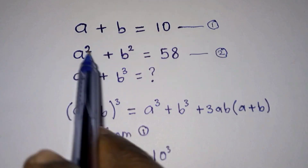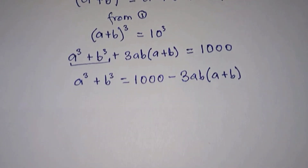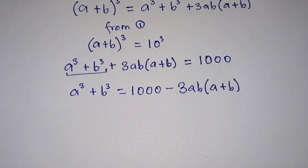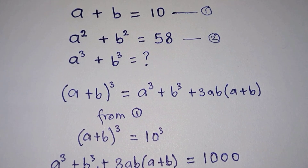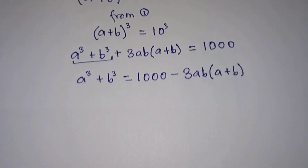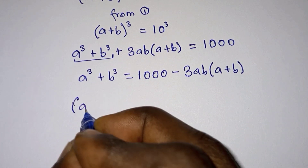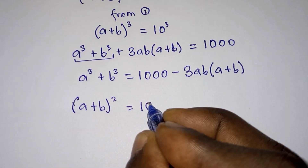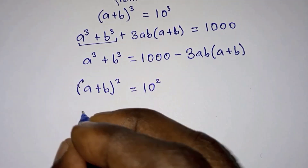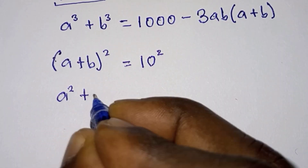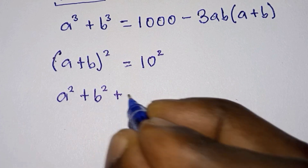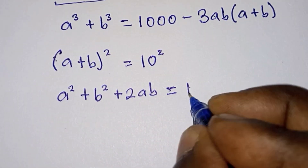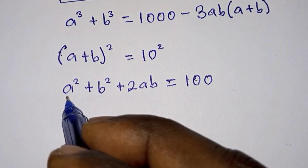For a plus b we know from equation one that it is 10. Now what is ab? If we find ab then the question is solved. To get ab, let's square equation one so that we get (a plus b) squared is equal to 10 squared. Expanding the left hand side we get a squared plus b squared plus 2ab.